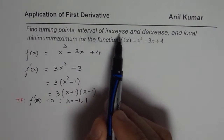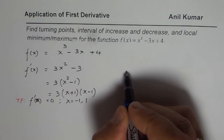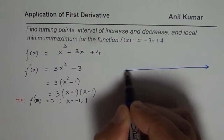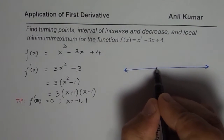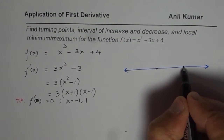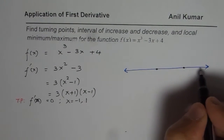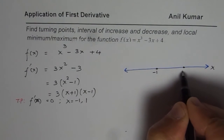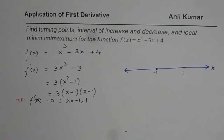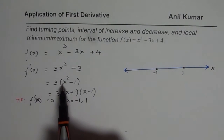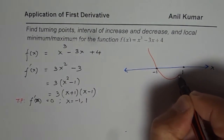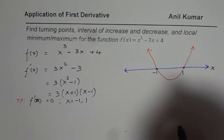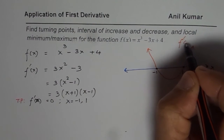Now we have to find intervals of increase and decrease. Let me sketch a number line here. The derivative has two zeros: one at -1 and the other at +1. If you sketch this parabola — the derivative f'(x) is a upward-opening parabola — the parabola represents f'(x).